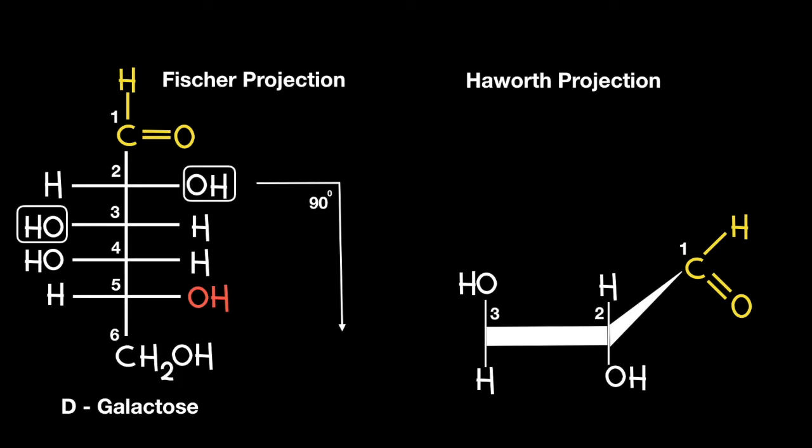Now connecting on to carbon number 4, I'm going to have to bend this bond back into the screen. Looking at the corresponding Fischer projection you can see that the OH functional group is pointing to the left, which means that at carbon number 4 the OH will be pointing up with its corresponding hydrogen pointing down.